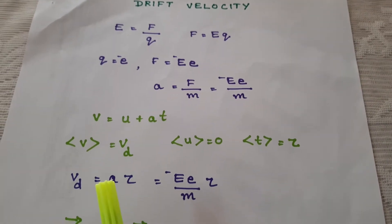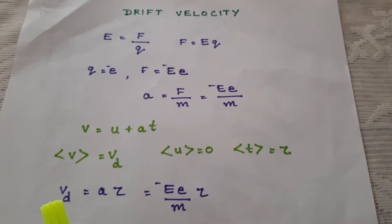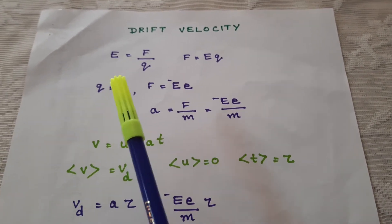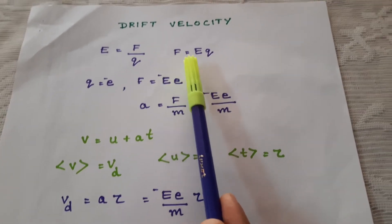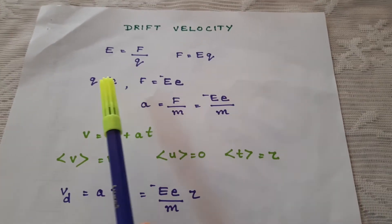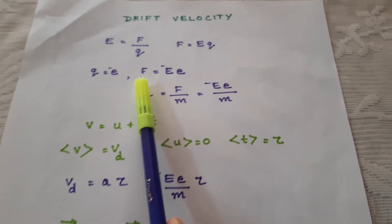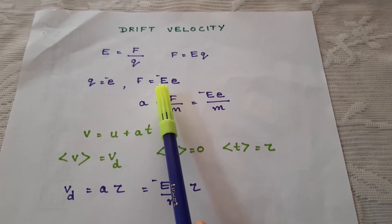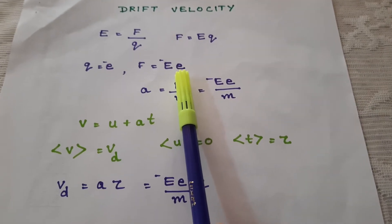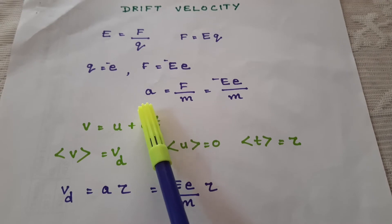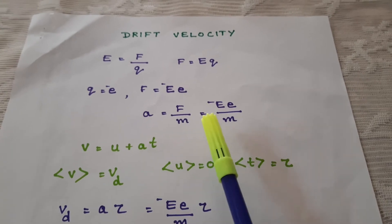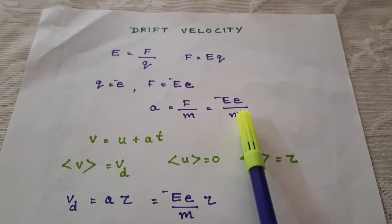But when an electric field is applied or a potential difference is applied, the electrons experience a force. The force experienced by the electron is F equal to Eq. The charge of the electron is minus e, therefore F is equal to minus eE, where E is the electric field and small e represents the charge of the electron. So the acceleration of the electron, a, equals F by m, which equals minus eE by m.